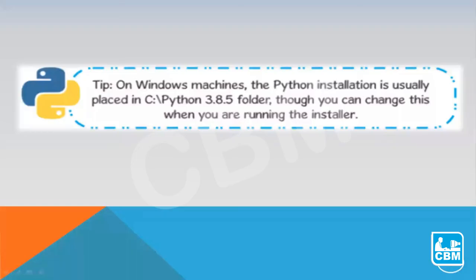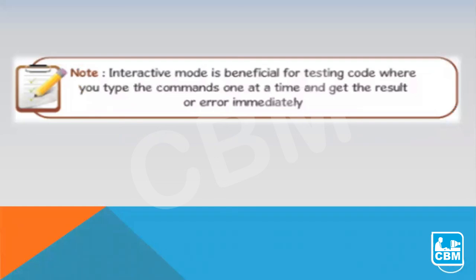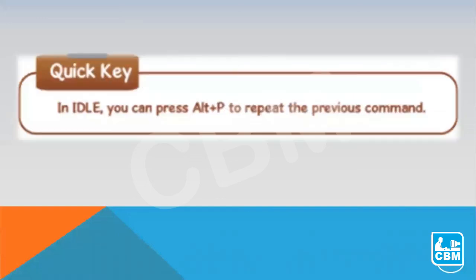On a Windows machine, the Python installation usually happens in the C drive of the computer or laptop. You can change the location when you are running the installer. Interactive mode in Python is advantageous when we want to test code and see the results or check errors immediately, because in interactive mode we type the commands one at a time and get the results immediately. In the Python IDLE, you can press Alt plus P keys on the keyboard to repeat the previous commands.